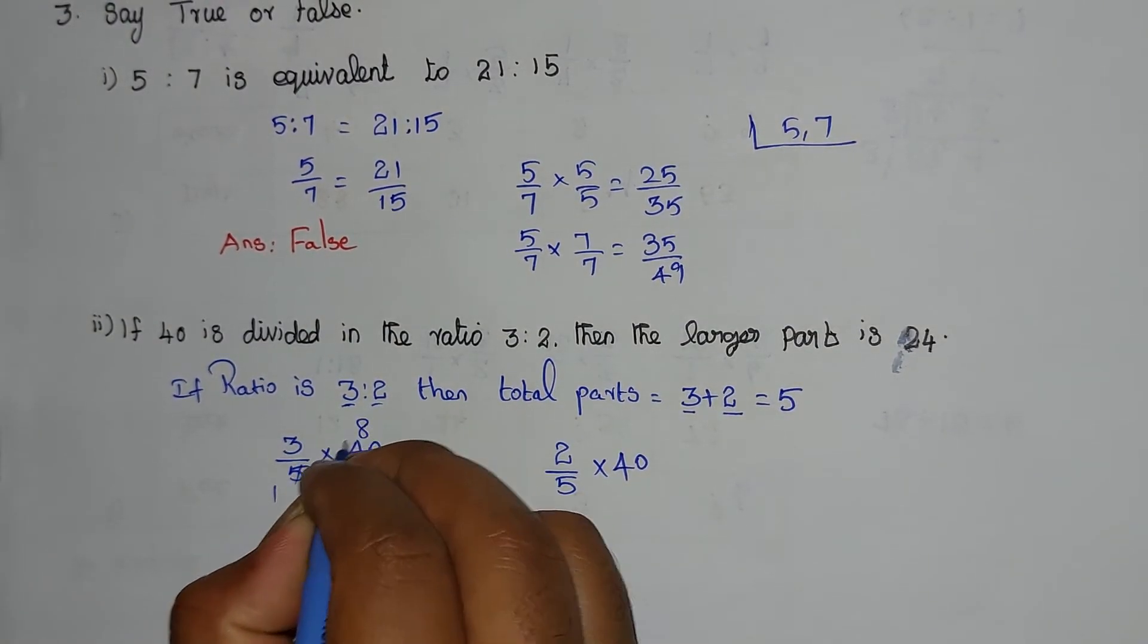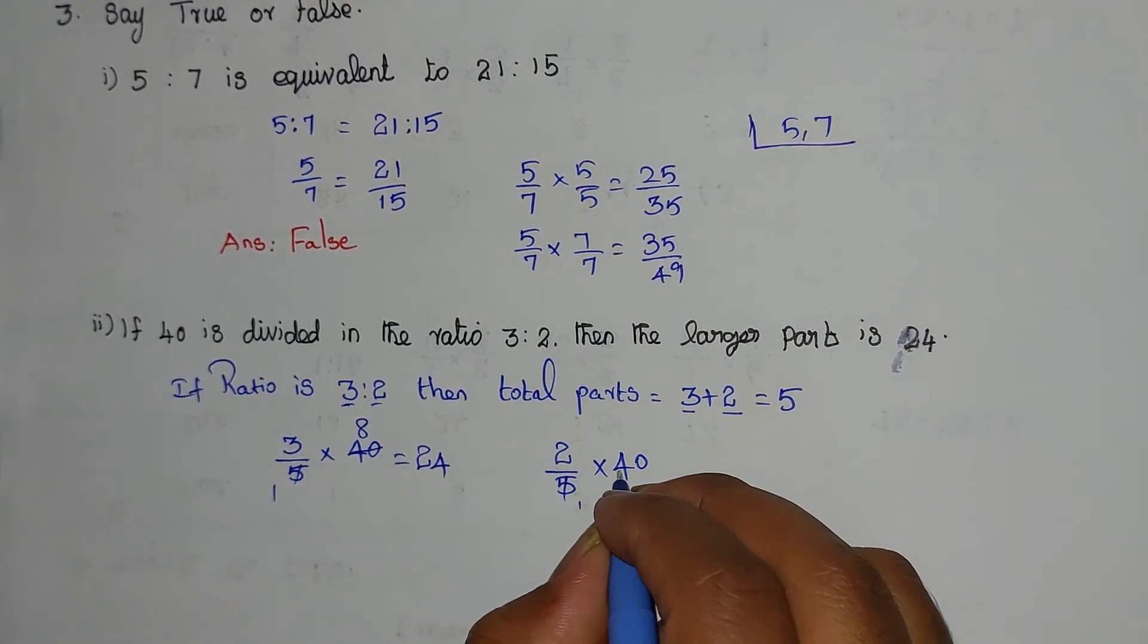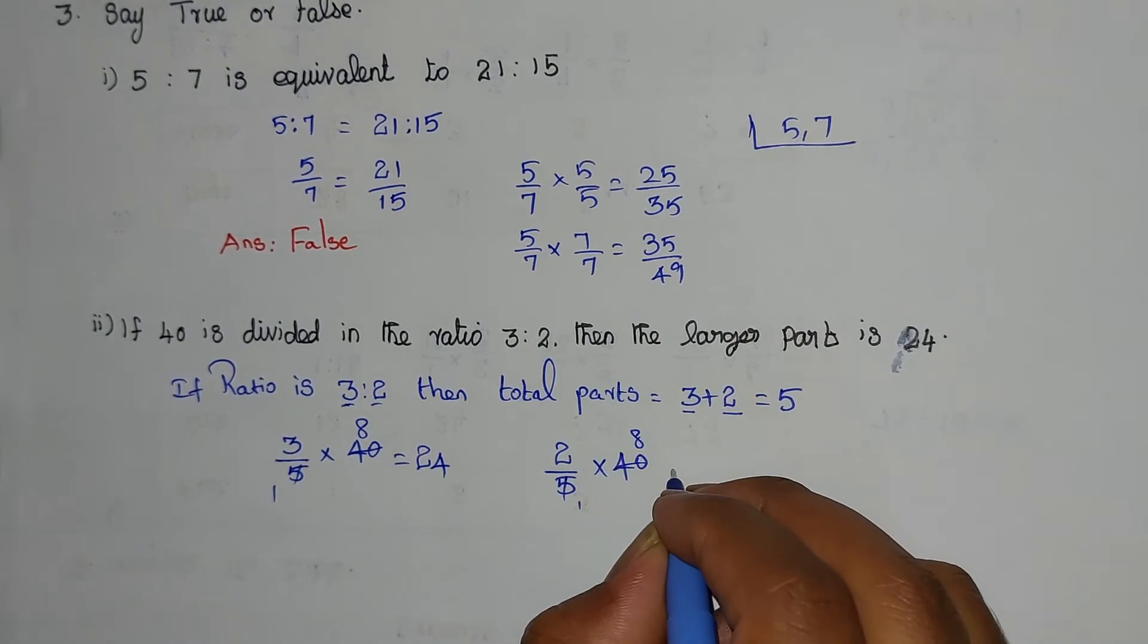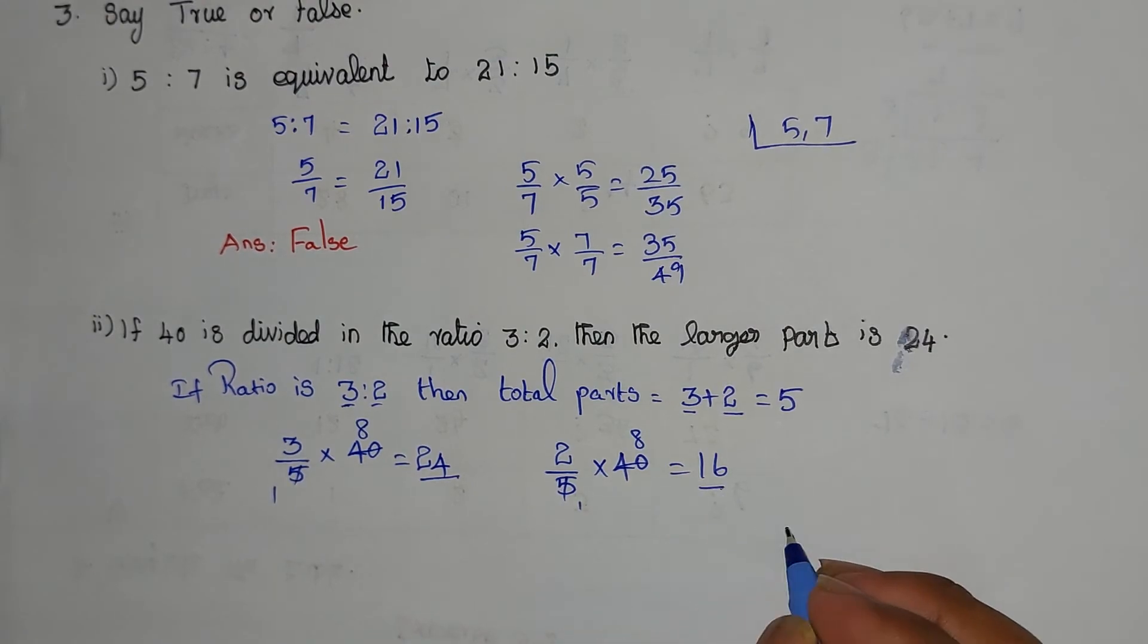3/5 times 40 equals 24. 2/5 times 40 equals 16. So one part value is 24 and one part value is 16.